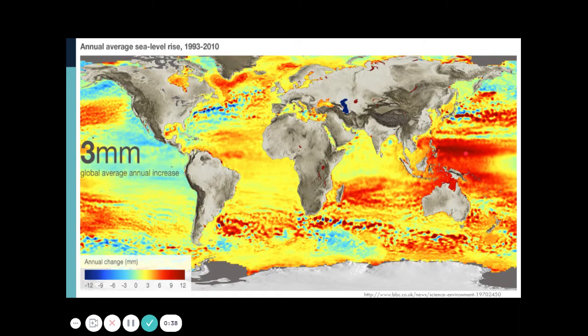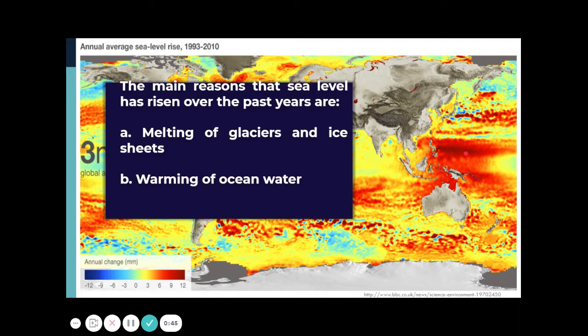What do you think is the main reason for sea level rise? As we all know, the main reasons are the melting of glaciers and ice sheets in the poles and the warming of ocean water, which causes the water to expand. This 20th century sea level rise is mainly caused by 20th century global warming.